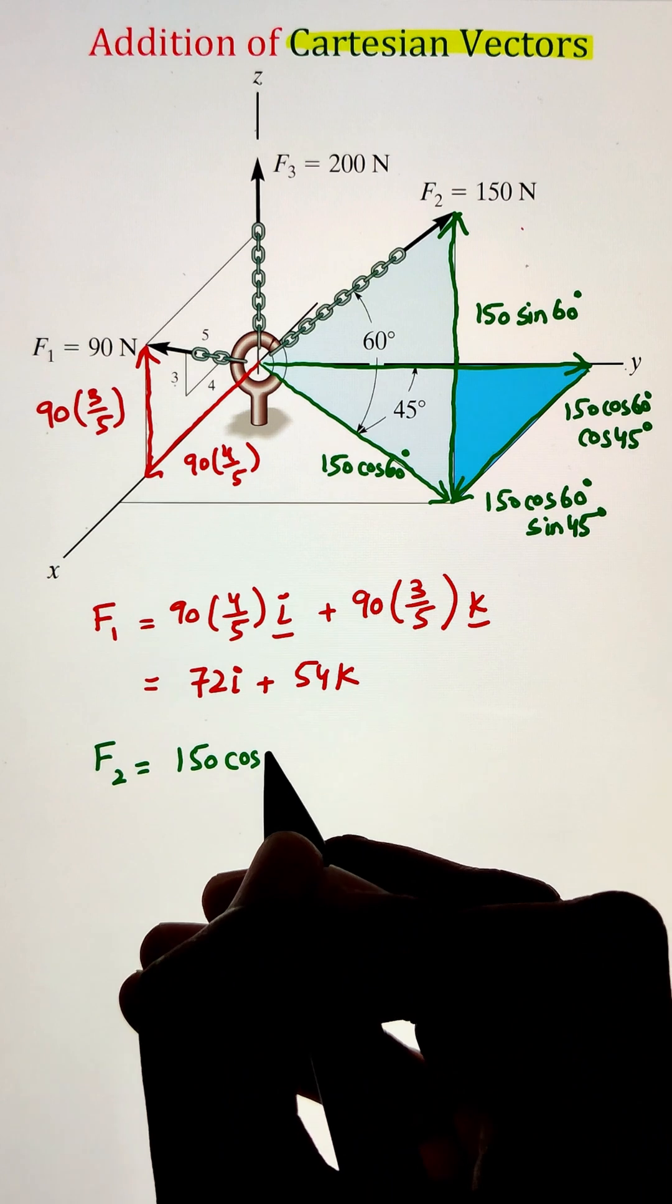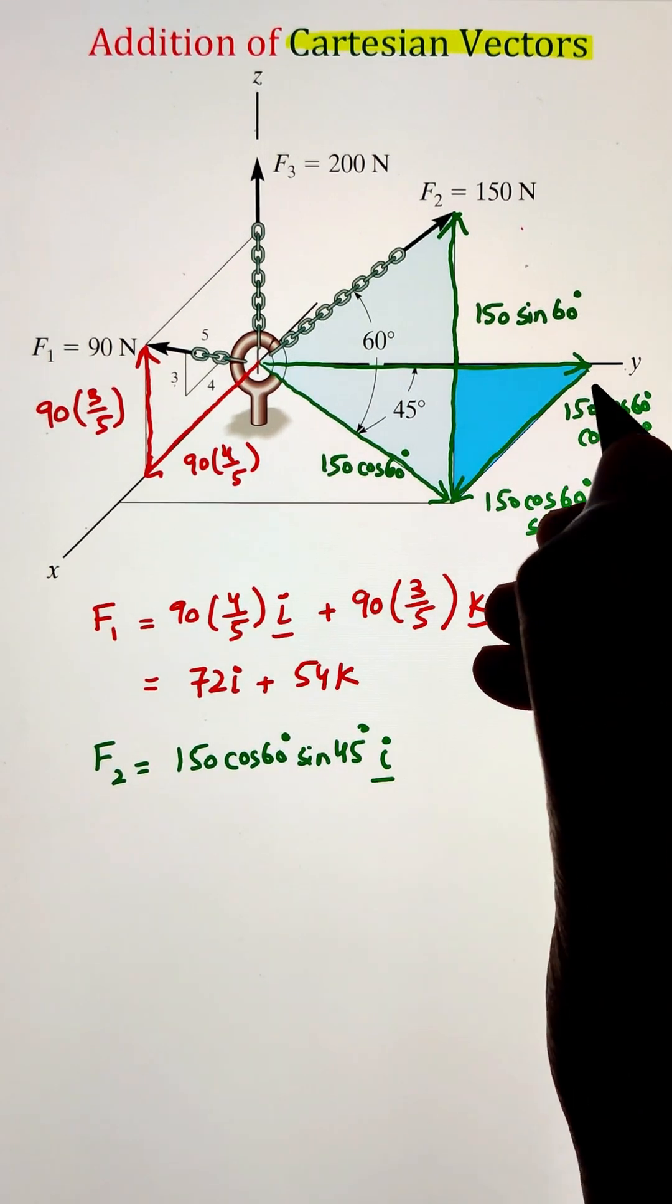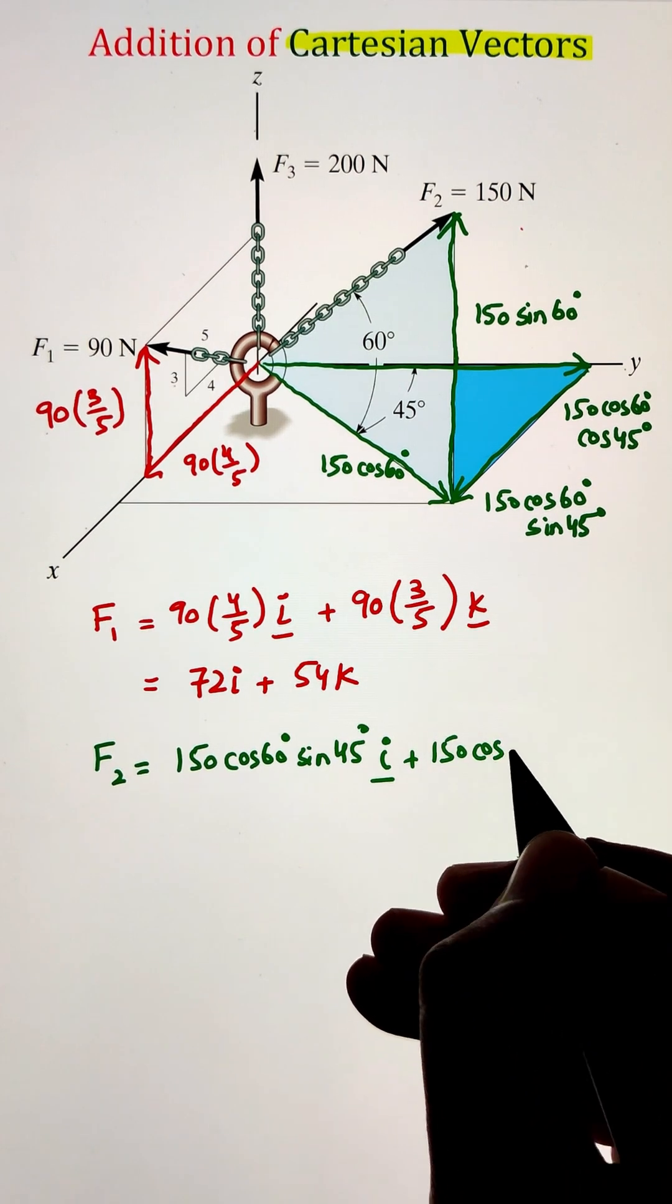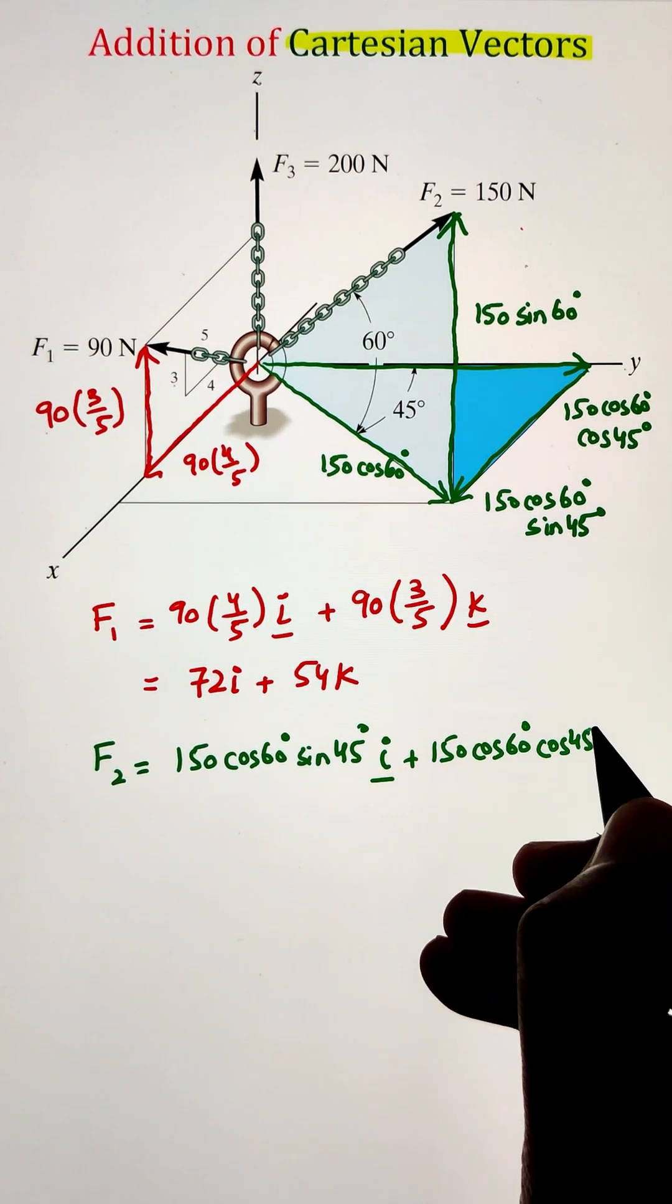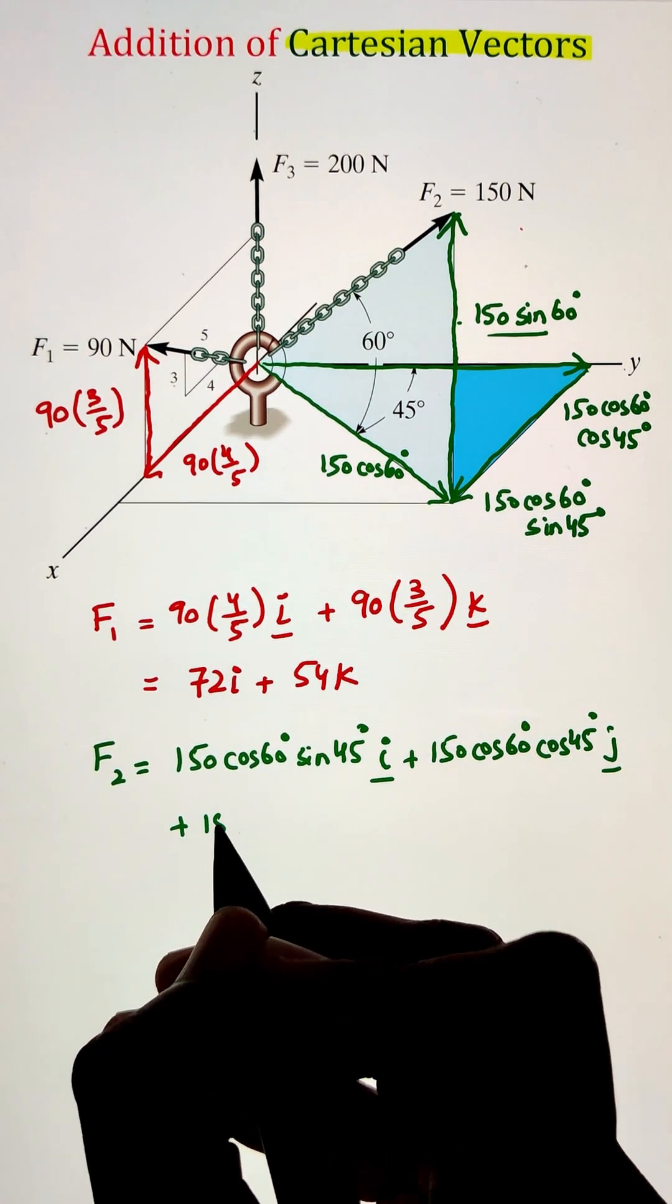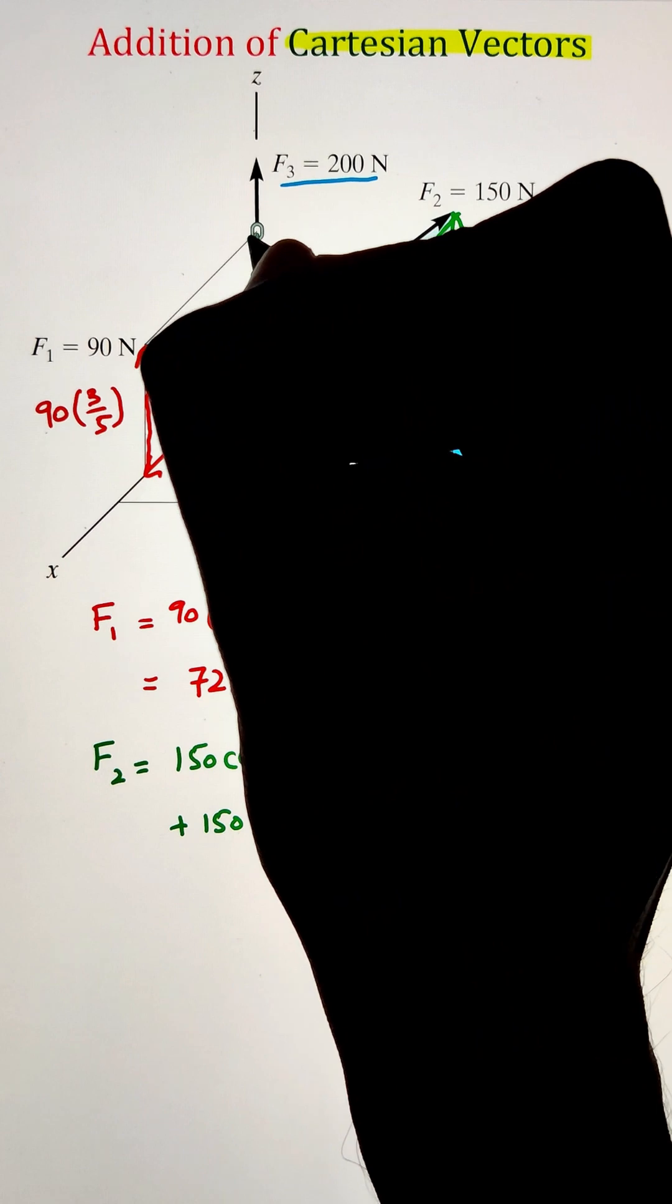Now, since we have 150 cos 60 sin 45 as the X component, it is represented by a unit vector I, whereas 150 cos 60 cos 45 is along the Y axis, so it is represented by a unit vector J. And finally, the Z component is represented by a unit vector K.